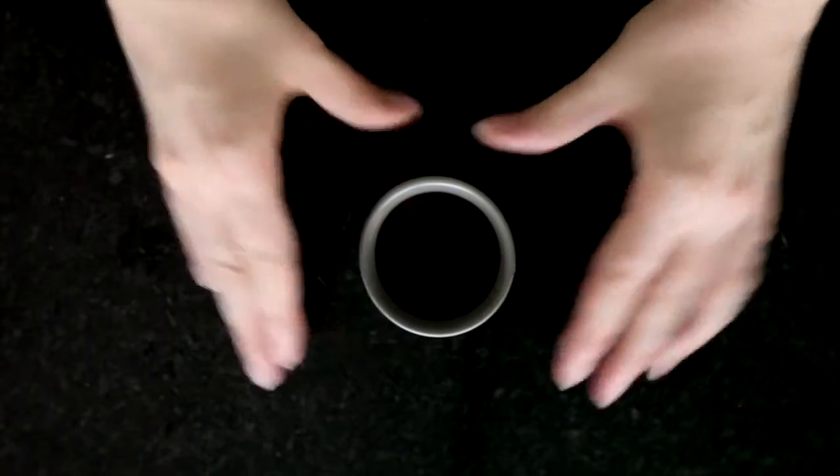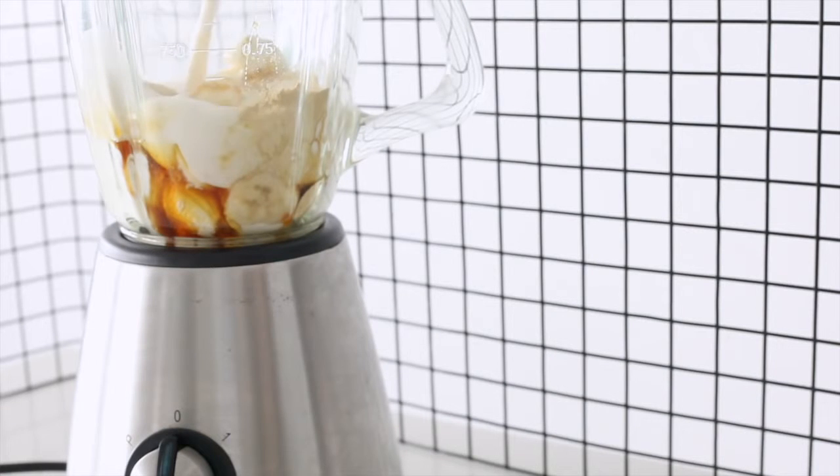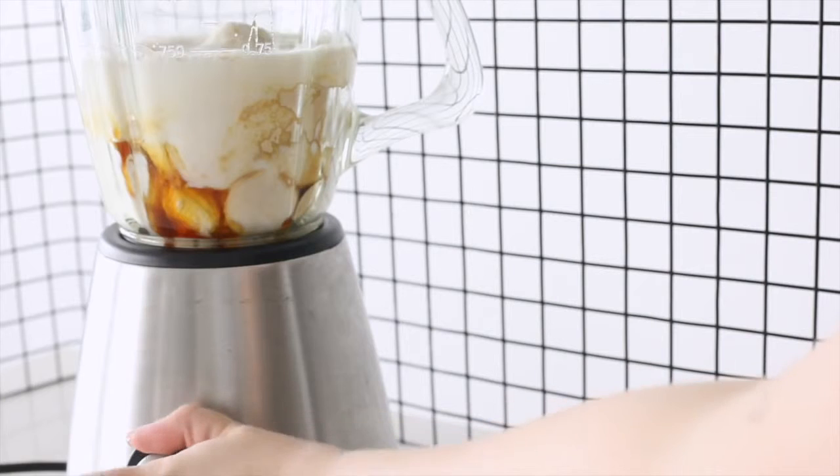A teaspoon of maca powder and two teaspoons of manuka honey. Or you could use rice malt syrup if you like. Then I'm adding some almond milk into this one and it's ready to go.